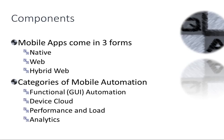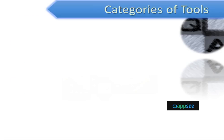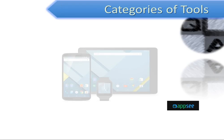Some categories of mobile automation to focus on — probably the main four you'll hear about: functional automation, which is GUI (graphical user interface); device cloud; performance and load tools, which are really important for mobile and exist for desktop applications and web too; and analytics — how do we know your application is performing the way we want?